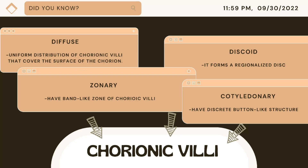Dogs and cats, on the other hand, have zonary placentas, which have a band-like zone of chorionic villi. Did you know that in rodents and primates, discoid placentas are present? It forms a regionalized disc. Lastly, ruminants have cotyledonary placenta with numerous, discrete button-like structures.